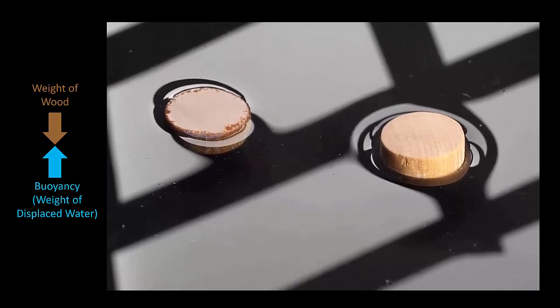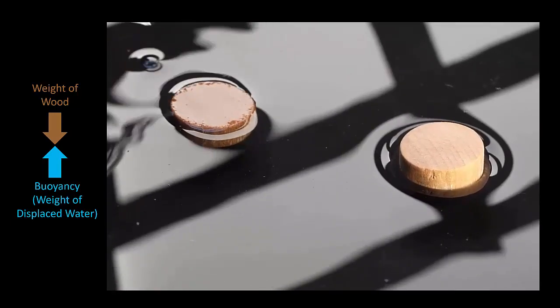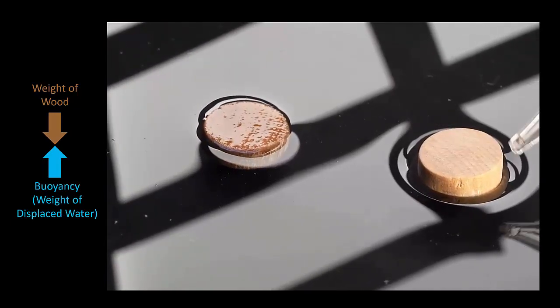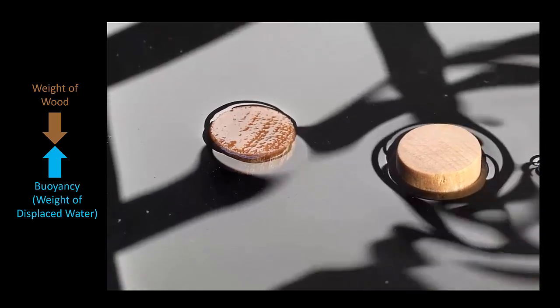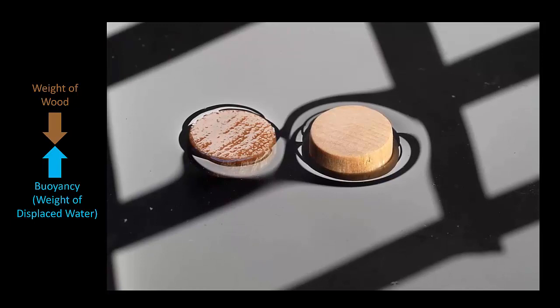Each disc should sink into the water until the downward weight of the wood is exactly balanced by its buoyancy force. And that buoyancy force is equal to the weight of the water displaced by the disc. But both discs are identical. They have the same size and weight. So you would expect both discs to displace the same volume of water and float with their water lines at the same level. But clearly, they don't.